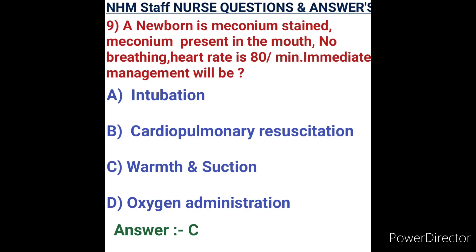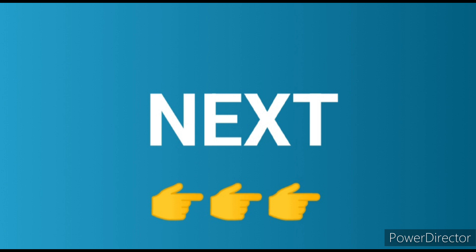Question number nine: a newborn is meconium-stained with meconium present in the mouth, no breathing, and low heart rate. Immediate management options: A) intubation, B) cardiopulmonary resuscitation, C) warmth and suction, D) oxygen administration. Priority order: first, position and suction; second, administer oxygen; third, monitor vitals; if no breathing, proceed to CPR; then intubation. Option C, warmth and suction, is the correct immediate first action.